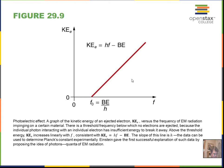Einstein's predictions were confirmed experimentally — around 1912 — by Millikan, the same person instrumental in determining the charge on the electron.